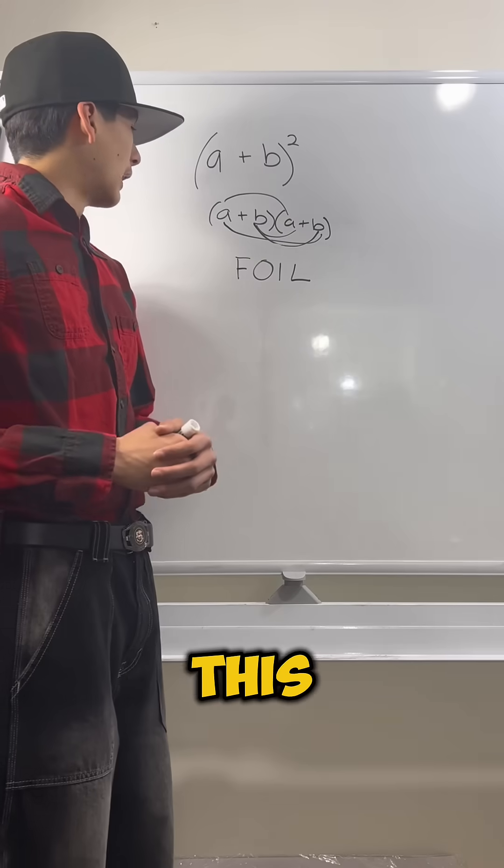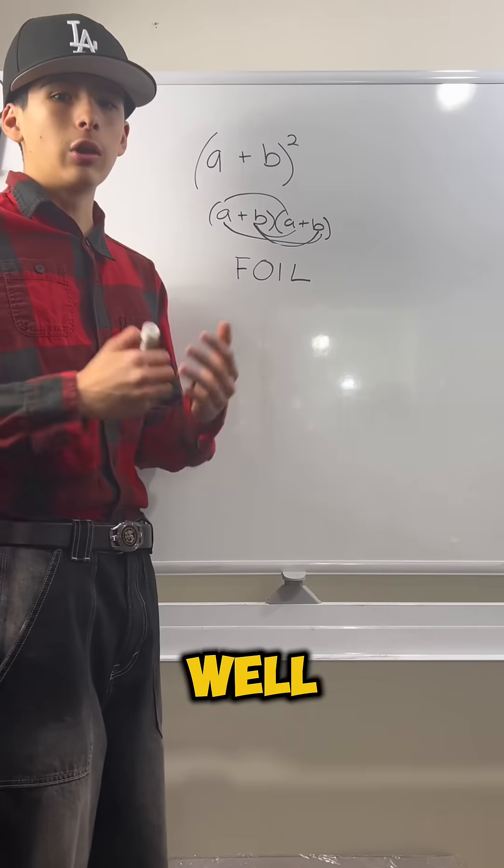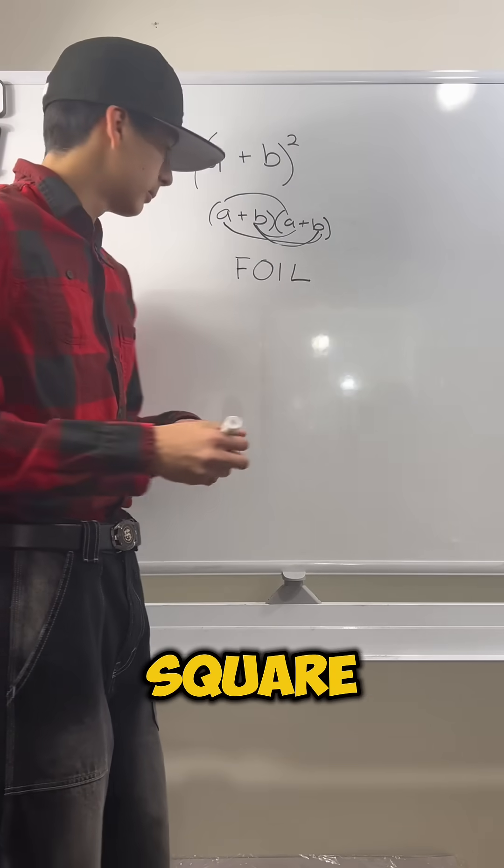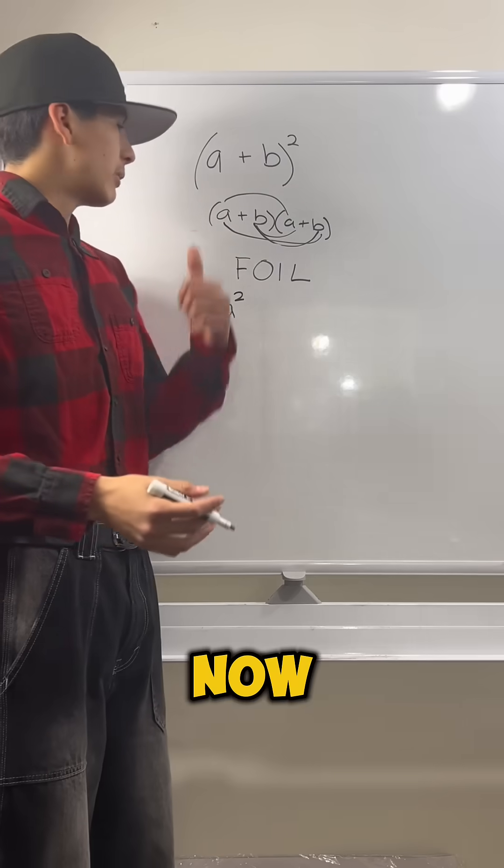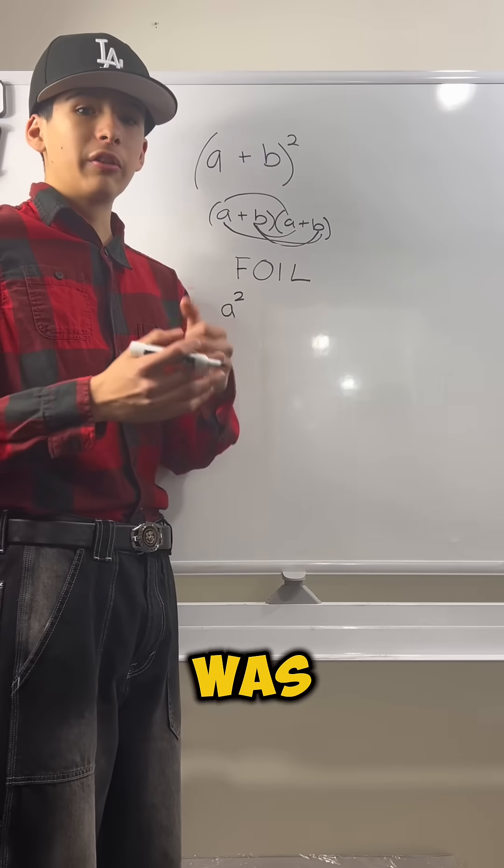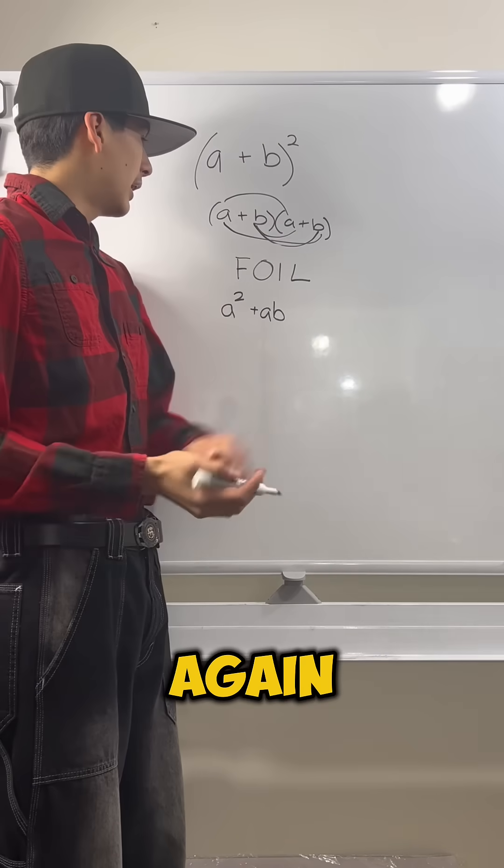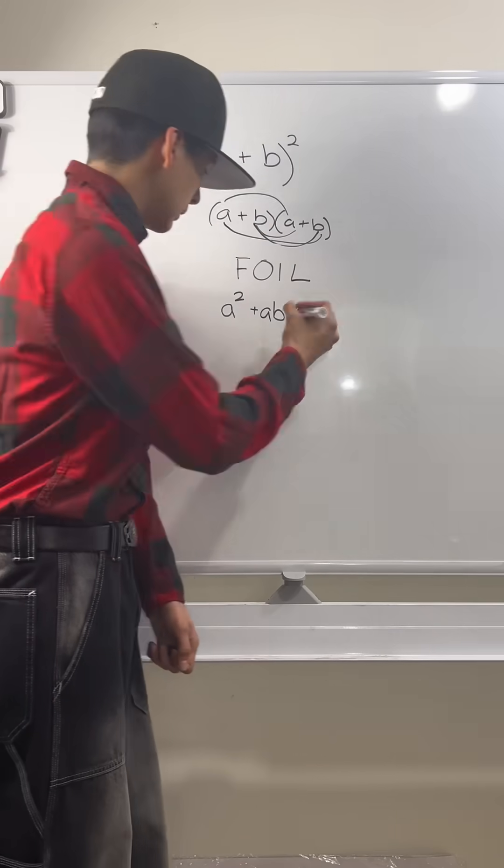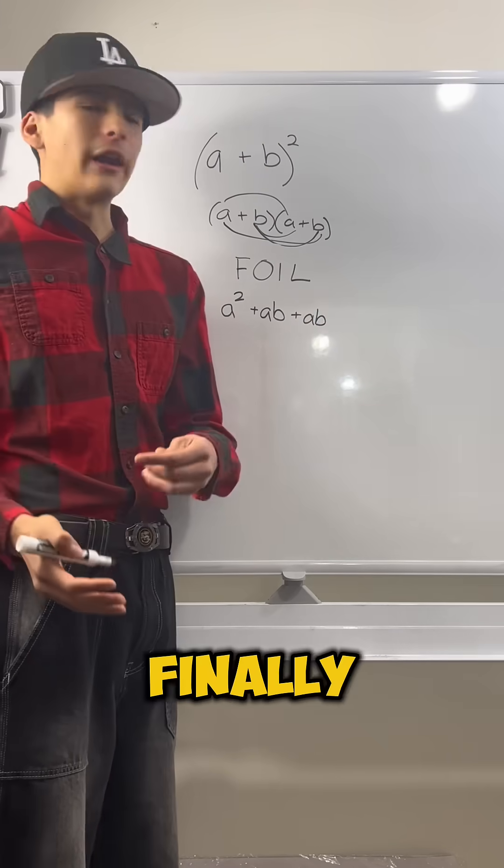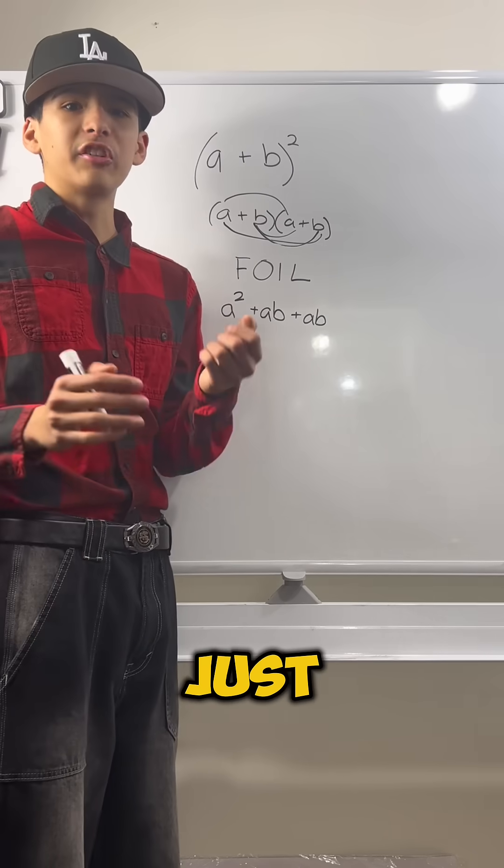Now, we can just multiply this out. So, a times a is just a squared. Now, we have a times b, which is just ab. And then we have a times b again, which is also ab. And finally, we have b times b, which is just b squared.